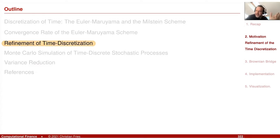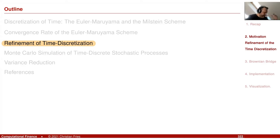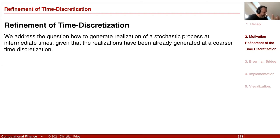It may happen that a financial product requires more time points than generated by the simulation. This raises a question: given an Euler scheme that already created a time-discrete process from a time-continuous process, can we later refine the time discretization? And first, let's ask this just for Brownian motion: given a Brownian motion, can we create a finer discretization that is embedded within a coarser one?